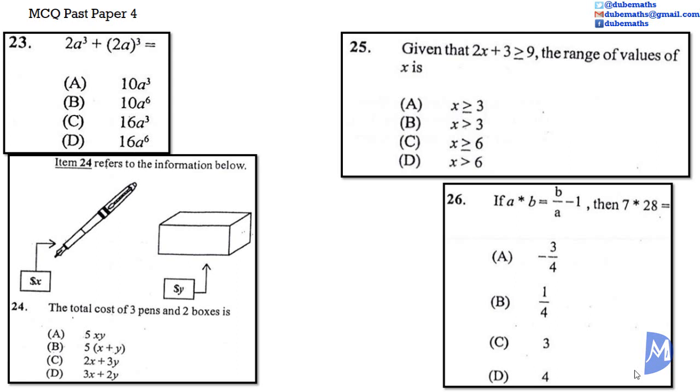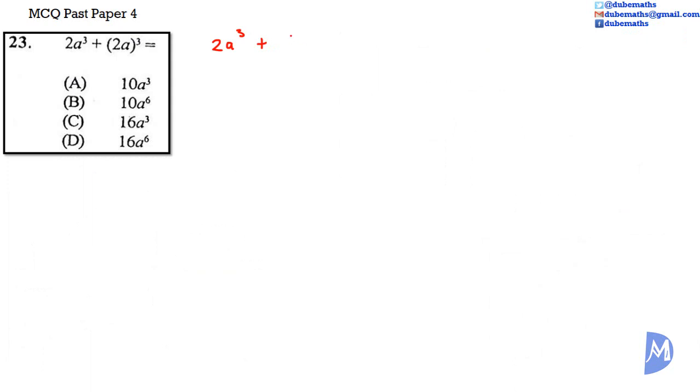2A cubed plus 2A cubed is equal to 2A cubed plus 2A cubed is 2A multiplied by 2A multiplied by 2A. 2A is 2 multiplied by 2 multiplied by 2 which is equal to 8 multiplied by A multiplied by A multiplied by A, A cubed. 2A cubed plus 8A cubed is equal to 10A cubed. The answer is A.